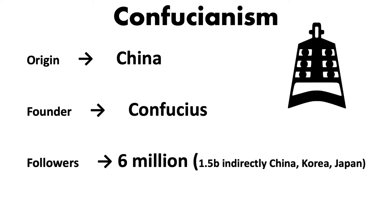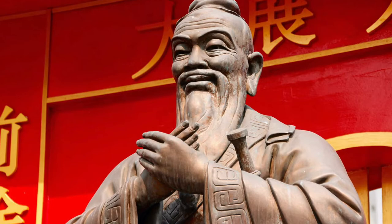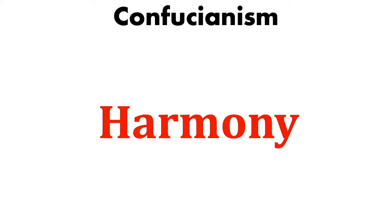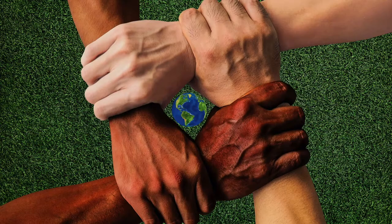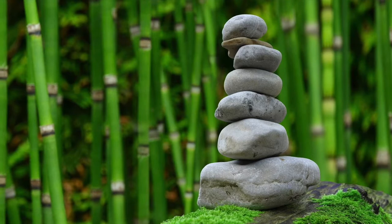Confucianism originated in China by a philosopher named Confucius. The word that best describes this religion is harmony. Not individual freedom, but social harmony, because it guarantees a peaceful coexistence, which is the goal of Confucianism.